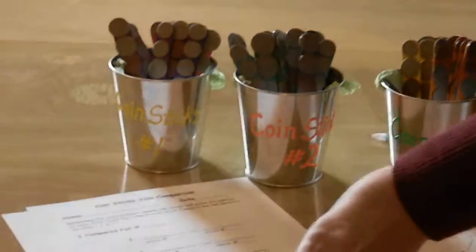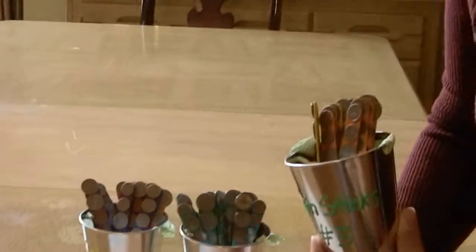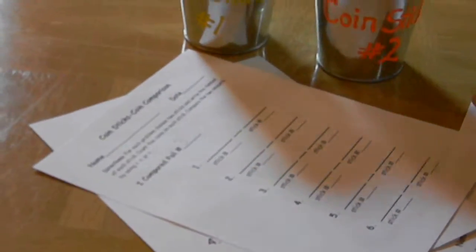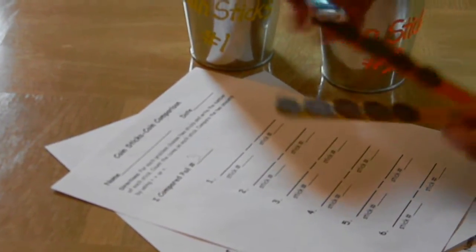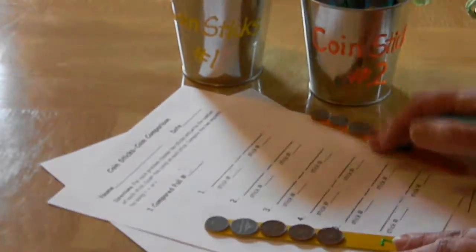Then this one would be a coin comparison so say they were going to use pail number three then they would just put I compared pail number three and what they would do for this activity is they would pick two sticks.